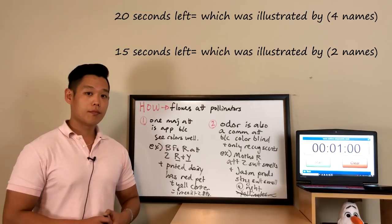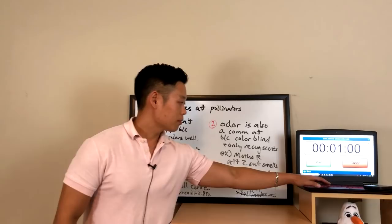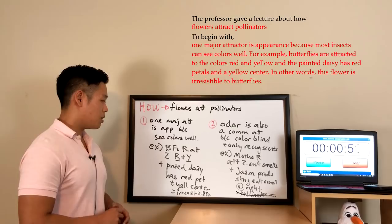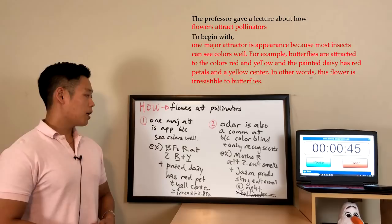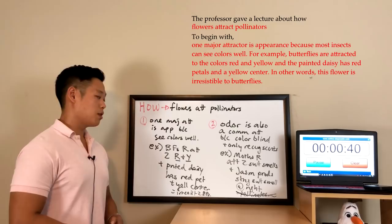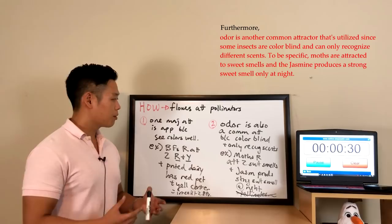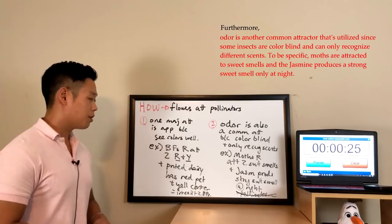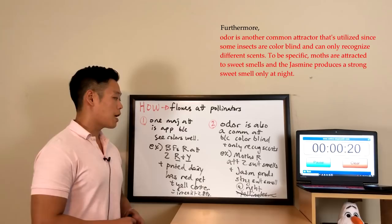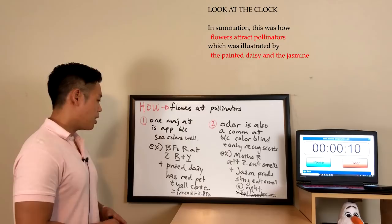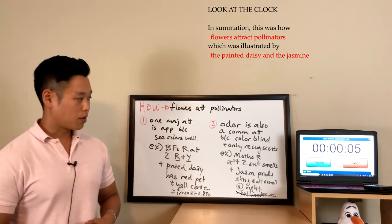Let's listen to my sample response. 'The professor gave a lecture about how flowers attract pollinators. To begin with, one major attractor is appearance because most insects can see colors well. For example, butterflies are attracted to the colors red and yellow, and the painted daisy has red petals and a yellow center — in other words, this flower is irresistible to butterflies. Furthermore, odor is another common attractor that is utilized because some insects are colorblind and can only recognize different scents. For instance, moths are attracted to sweet smells and the jasmine produces a strong sweet smell only at night. In summation, this was how flowers attract pollinators, which was illustrated by the painted daisy and the jasmine, as given by the professor in the lecture. Thank you for your time and consideration.'